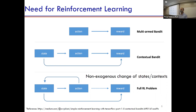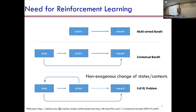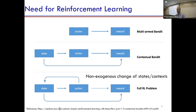In the bandit setting, you pick a class and get a reward. The departure from supervised learning is that in supervised learning, the feedback also tells you what the right class was. Here there's no such information — you pick a class, you get a reward of zero, that's all you know. You wouldn't know what would have happened if you had chosen the other class. The feedback is called bandit feedback.